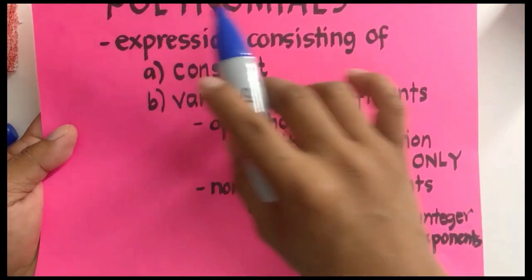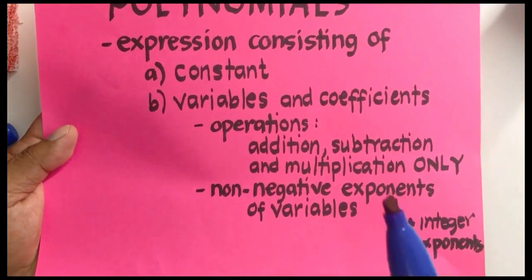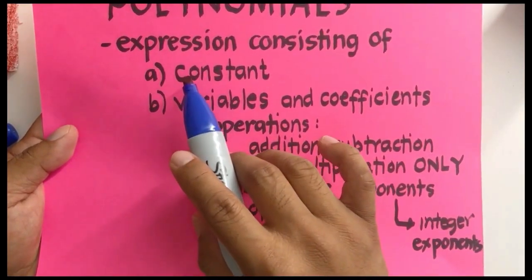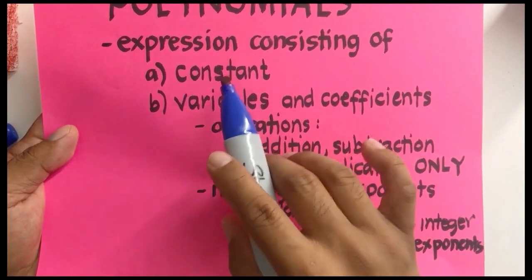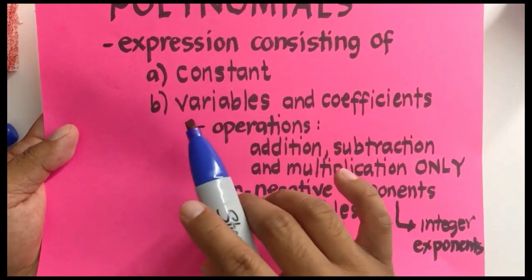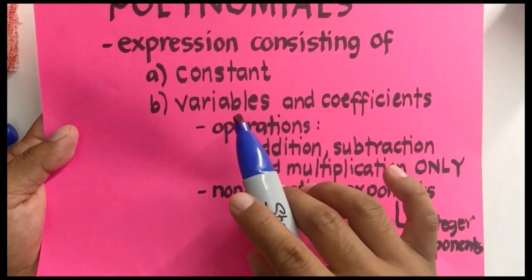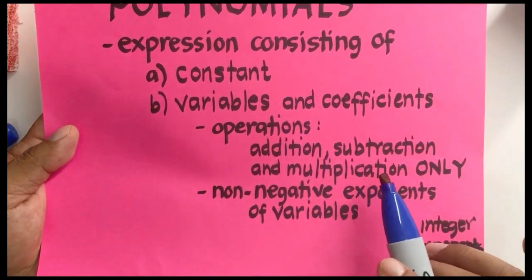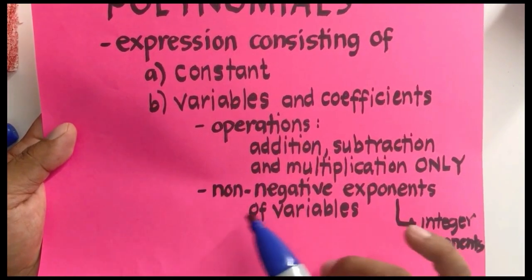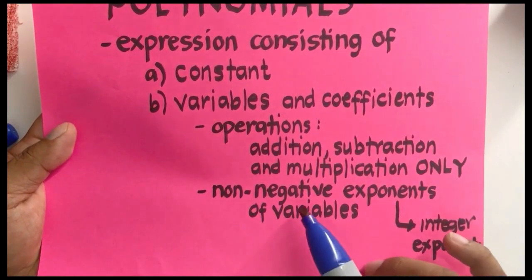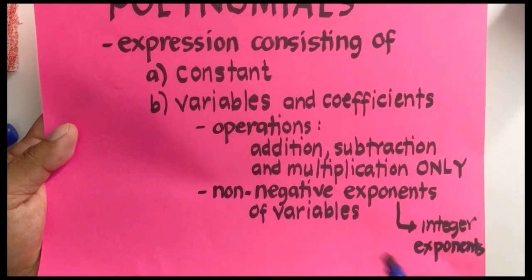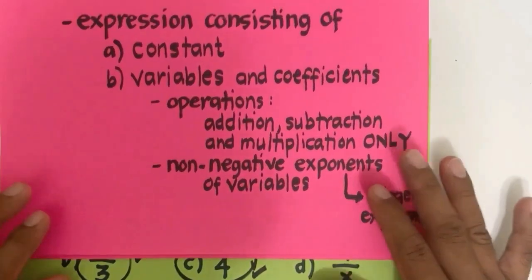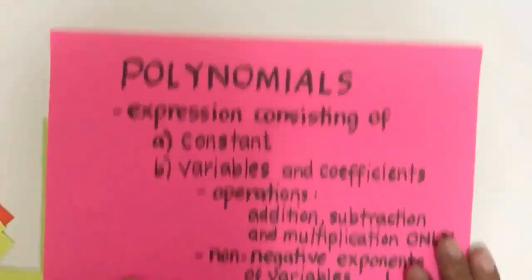When confused about whether an expression is a polynomial, always check: Is it a constant? If yes, it's automatically a polynomial. Does it involve a variable? If yes, make sure there is no division involving variables, and make sure the exponents, if they exist, are non-negative integers. With that as an introduction, let's do some operations on polynomials.